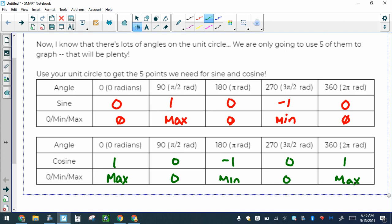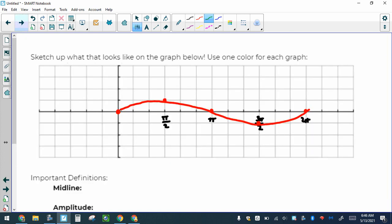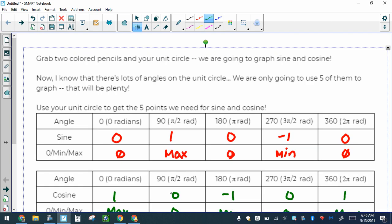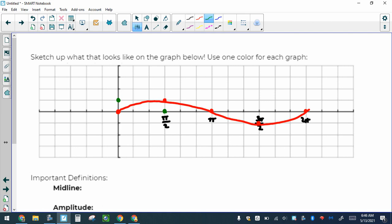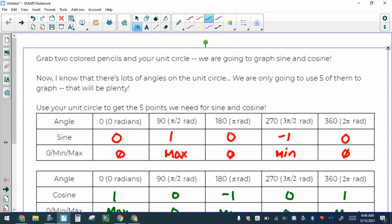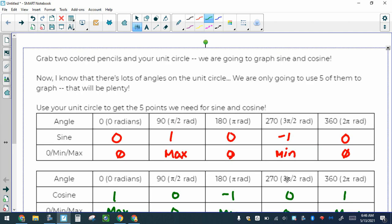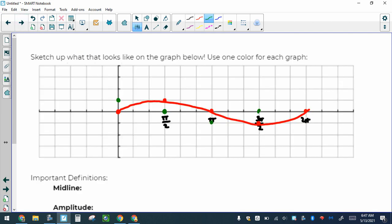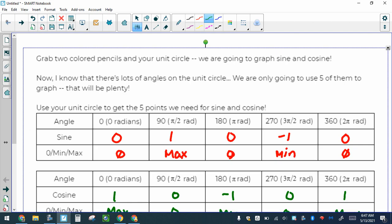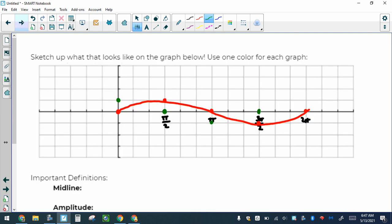It starts at a maximum, goes down, comes back up. So let's graph these on the graph. At 0, 1. π/2, 0. At π, we're at -1. At 3π/2, we're back at 0. And then at 2π, we're back at 1.